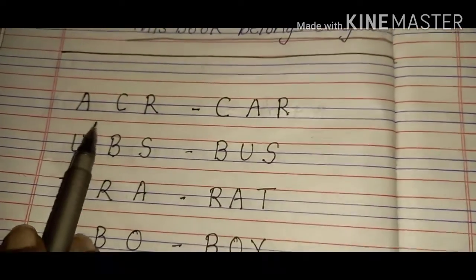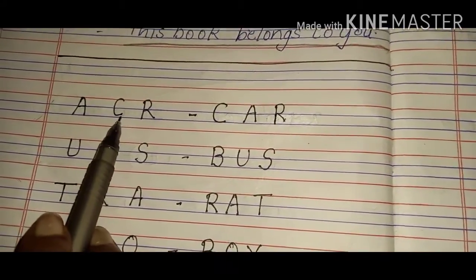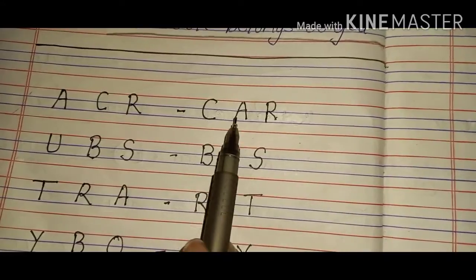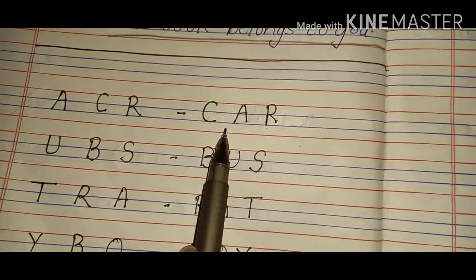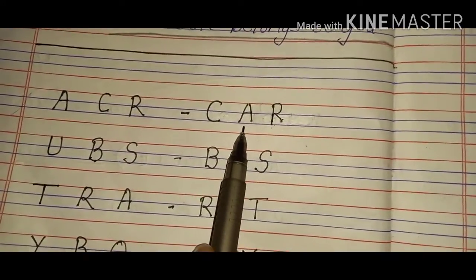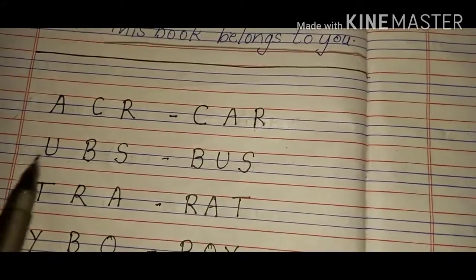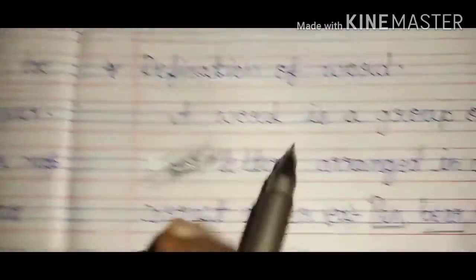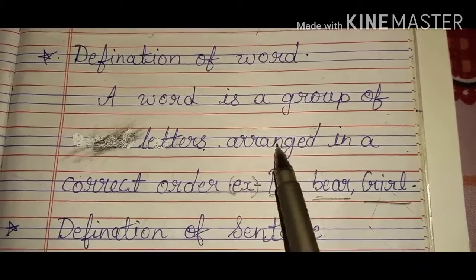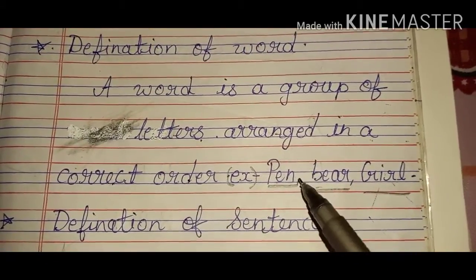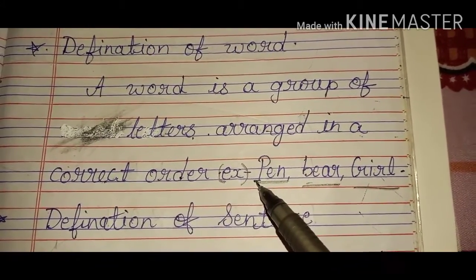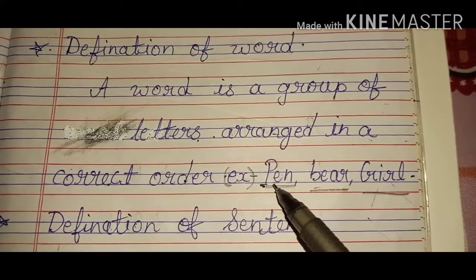So children, just now you had seen that there were some letters which were not arranged in proper and correct order. And when we wrote the letters in the correct order, they formed into a proper word. So this is the meaning of word. Now we will learn the definition of word. A word is a group of letters arranged in a correct order. Group of letters hone chahiye aur proper, yani correct systematic order mein likhe hone chahiye — tabhi use word kehte hain.